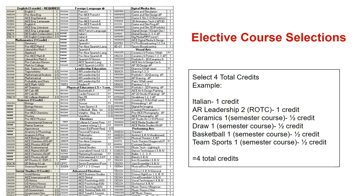You will select a total of four elective credits. Once you look over the document, you can determine which courses most interest you to make your selections. Remember that you need to choose a total of four credits. For example, a foreign language class is a full year class, one credit. An ROTC selection is a full year class, also one credit. A semester of ceramics and drawing are both half credit courses. Basketball and team sports are also half credit courses. These six selections would equal to a full four credits.